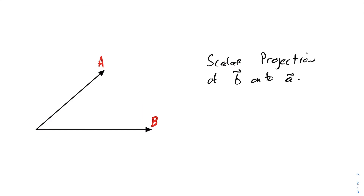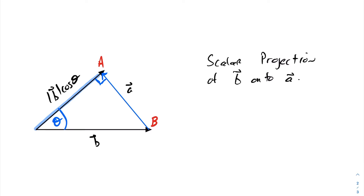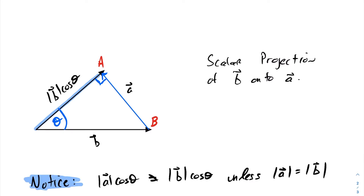Now suppose we wanted to calculate the projection of B onto A. The projection of vector B onto vector A would again create a right angle. My angle theta is still the angle between vectors A and B. With vector A and vector B defined, by definition this projection length would be the magnitude of B cosθ. In general, the magnitude of A cosθ is not equal to the magnitude of B cosθ unless these magnitudes are equal. In other words, the scalar projection of A onto B and the scalar projection of B onto A are generally not equal.